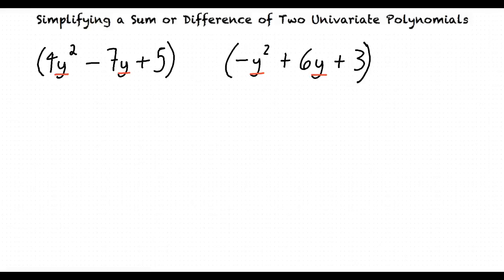Okay, I understand that both of the example polynomials are univariate, but how do I add or subtract them? Let's start by adding the two polynomials.